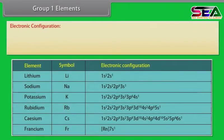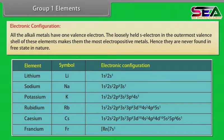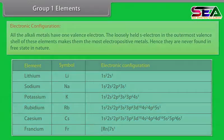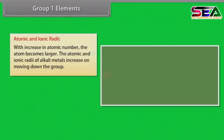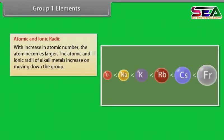All the alkali metals have one valence electron. The loosely held S-electron in the outermost valence shell makes them the most electropositive metals. Hence they are never found in free state in nature. The atomic and ionic radii of alkali metals increase on moving down the group with increase in atomic number.